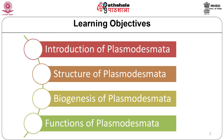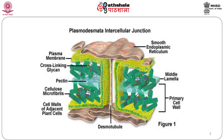Introduction to plasmodesmata, structure of plasmodesmata, and functions of plasmodesmata. In this slide we are seeing plasmodesmata as an intercellular junction, where we can see smooth endoplasmic reticulum, middle lamella, primary cell wall, plasma membrane, cross-linking glycan, pectin, cellulose microfibrils, cell wall of adjacent plant cells, and desmotubules in between the cell walls.